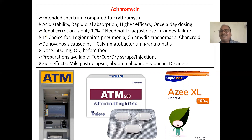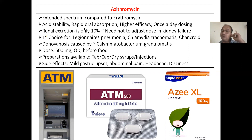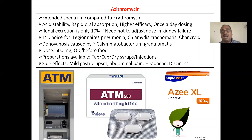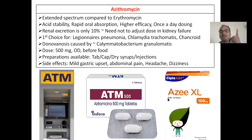Azithromycin has an extended spectrum compared to erythromycin, better acid stability, rapid oral absorption, and high efficacy — once-daily dosing is sufficient. Renal excretion is only 10%, so dose adjustment is not needed in renal failure. It is a first choice for pneumonia, Chlamydia, tetanus, and chancroid. Dose: 500 mg once daily for three days. Available as tablets, capsules, and dry syrup for children.